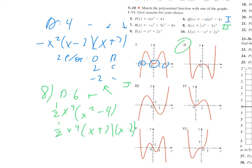Lastly in this section, number ten. I see this is degree three negative, so it's going up to the left and down to the right. I'm going to factor this — I'll take out a negative x squared, which leaves me with x minus two. So I only have zeros at zero and two; zero would be a bounce. That's Roman numeral four — we've got our bounce at zero and our cut at two.